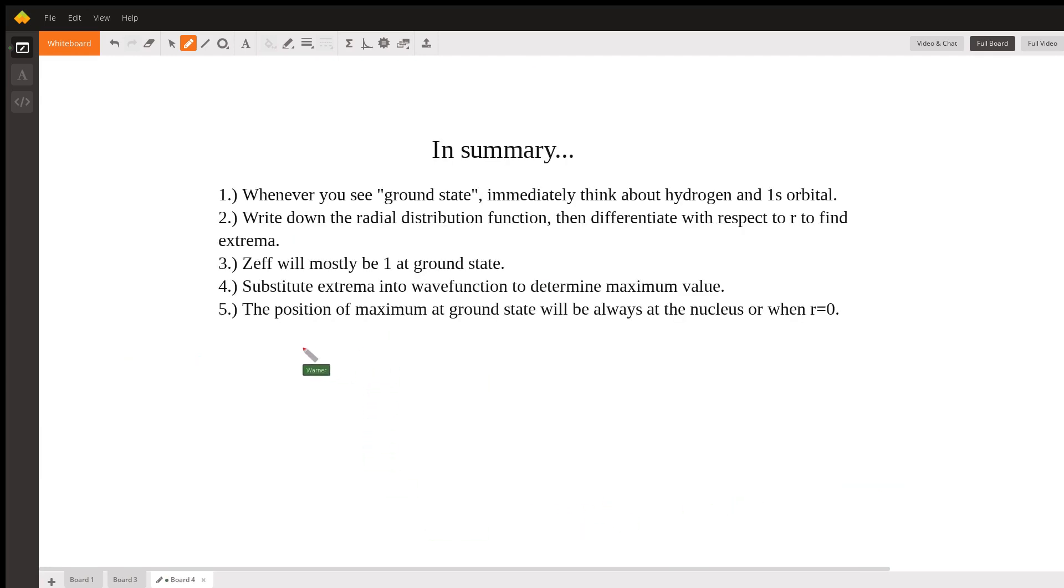So in summary, whenever you see ground state, you have to think about hydrogen in the 1s orbital, and the characteristics of what is a 1s orbital. We write down the distribution function, and we differentiate with respect to R, set it equal to zero, and find the extrema. So if R is equal to zero, we realize that the constant times whatever E is, it's just going to be the constant as the maximum. ZF is going to be at ground state. So when it's at ground state, it's just going to be equal to one. That's the most important thing in this problem. We substitute whatever extrema into the wave function and determine the max value. And the position of the maximum at ground state will always be at the nucleus, or when R is equal to zero. So this is a characteristic of different atoms at ground state.